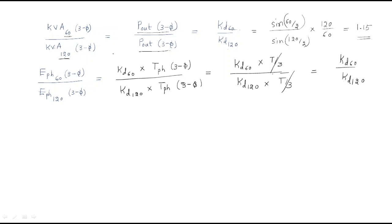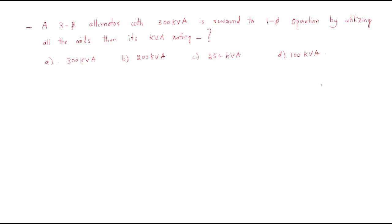This gives the relation between KVA ratings for different phase spread machines, and the different phase voltages generated by an alternator with different phase spreads — and both give the same ratio. Next we will solve a problem: a three-phase alternator with 300 KVA is rewound to single-phase operation utilizing all the coils. What is its new KVA rating? Options are: 300 KVA, 200 KVA, 250 KVA, or 100 KVA.